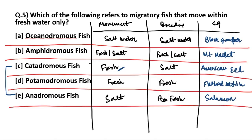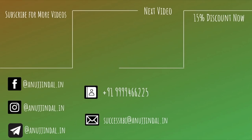Name some other examples of these fish categories in the comment section. This is all for the ARD video for day six. The course links are already available in the description. Do not forget to subscribe to our channel if you have learned anything from this video. Thank you so much for watching.